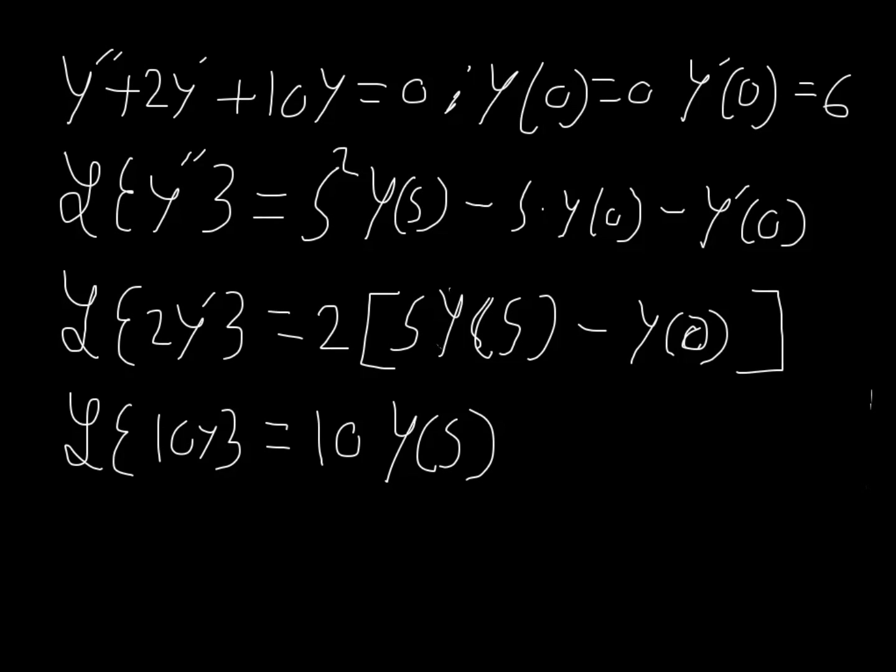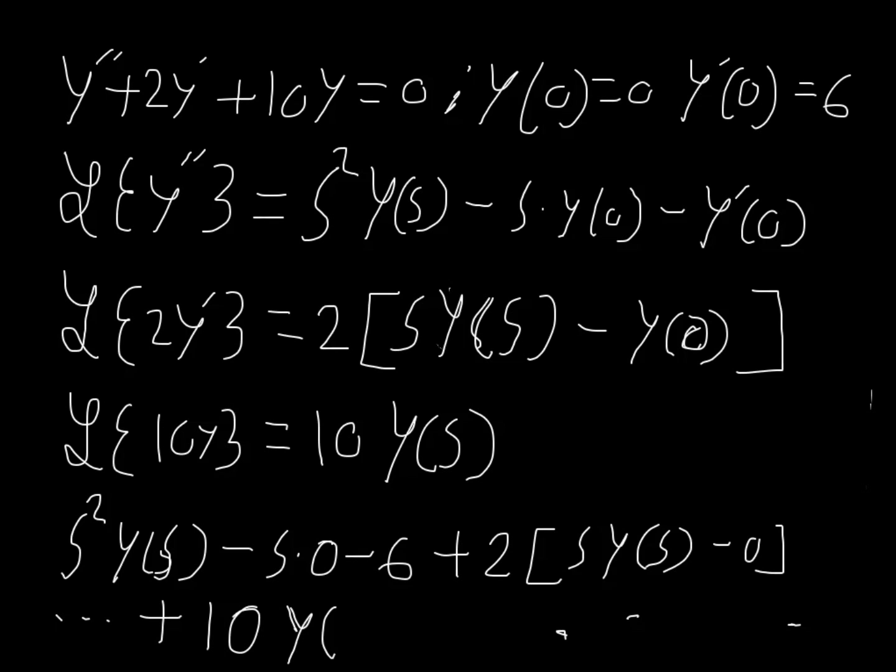So what we end up with is substituting with the initial value, we get that s squared times y sub s minus s times 0 minus 6, plus 2 times the quantity of s times y sub s minus 0, plus 10y sub s. And I'm going to put that on the next line, just because I'm running out of room. Plus 10y sub s, all this is equal to 0. I'm going to write this on the other side, simplifying for whenever we get 0s, because 0s does not affect the equation.